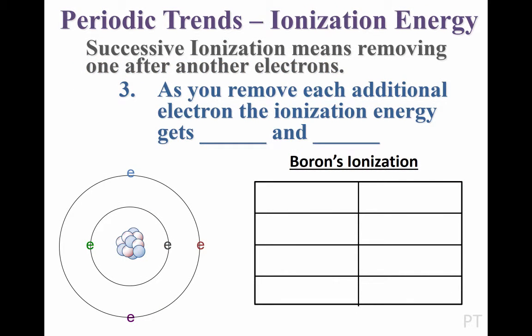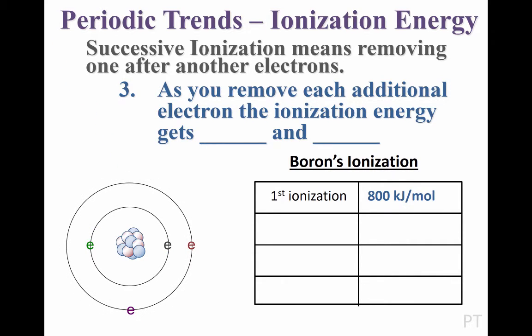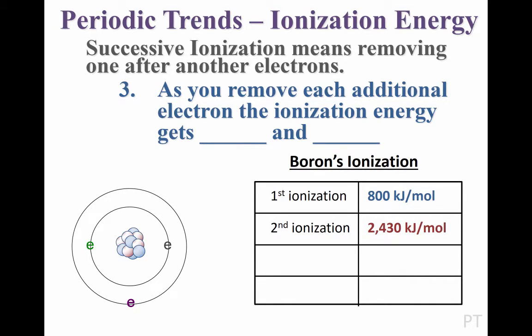Now we'll consider successive ionization energy — removing one after another of an atom's electrons. As each additional electron is taken from a boron atom, let's notice what happens to the ionization energy, focusing on the valence electrons as we successively ionize boron. We remove the first electron, and it costs 800 kilojoules of energy. Notice that in this process, the radius of the electron shell is reduced because there's less repulsion between electrons. The second electron removed requires even more energy — about 2400 kilojoules. And the third, even more energy. With each ionization, the remaining electrons move in closer to the nucleus, so the ionization energy gets higher and higher.